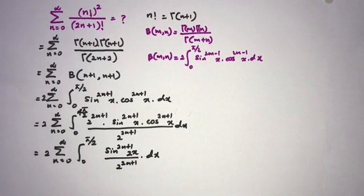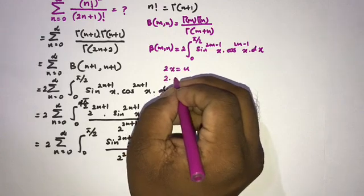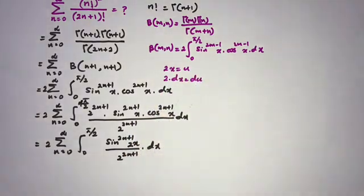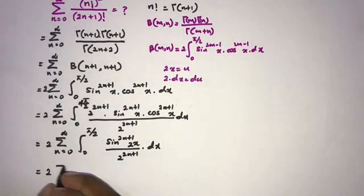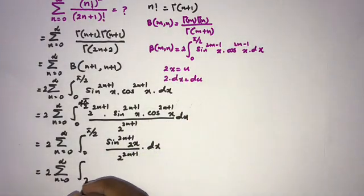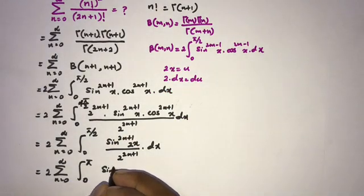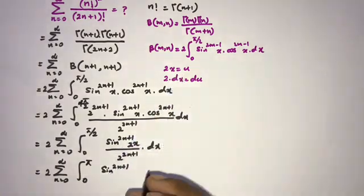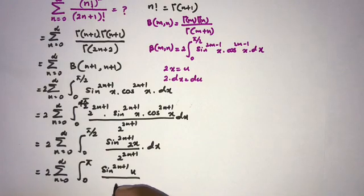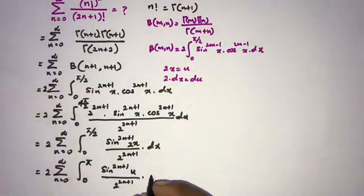Now I use the substitution 2x equals u, so differentiating gives 2 dx equals du. The limits transform: when x approaches 0, u approaches 0; when x approaches pi over 2, u approaches pi. Since dx equals du over 2, this factor of 2 cancels.